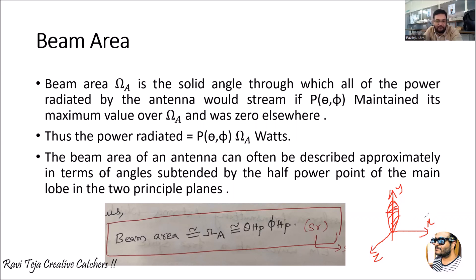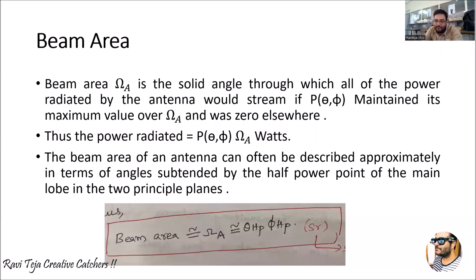In a main lobe there will be two half power points with respect to the two principal planes. The whole beam area can be considered as the two half power points or half power beam width with respect to both theta and phi. If you consider this particular circular area where the energy is getting distributed, the major lobe is subdivided into two half power beam width values — theta-HP and phi-HP — in a whole circular plane. Beam area is the area in which the signal has been radiated, expressed in terms of P(theta, phi) with respect to omega-A in watts.